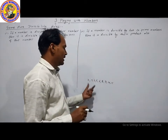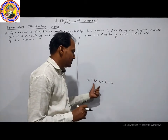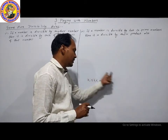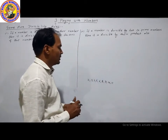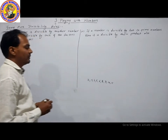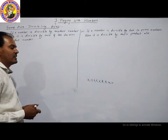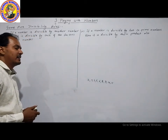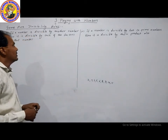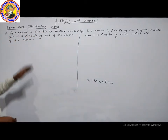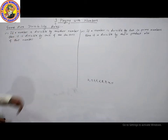We have already read the divisibility rules of 2, 3, 4, 5, 6, 8, 9, 10, and 11. Now, we will cover some more divisibility rules.